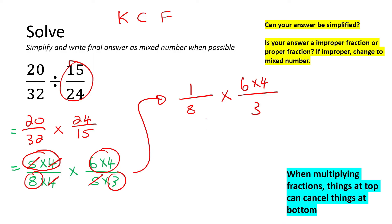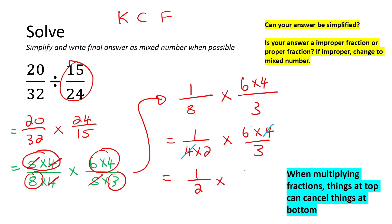We can break some numbers down a little bit further. For example, I'm going to change this 8 into 4 times 2. Now this 4 can cancel that 4. So at the top we now have 1 over 2, and over here we have 6 over 3. These numbers are nice and small, so we just multiply tops together and bottoms together. That gives us 6 at the top, and 2 times 3 is 6. 6 divided by 6 is 1.